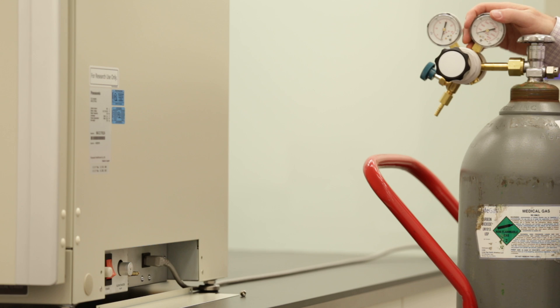In this instance, we are using a two-stage regulator. Ours is calibrated 0 to 15 pounds per square inch on the outlet.